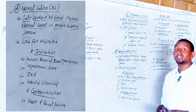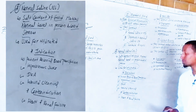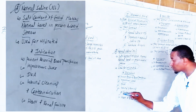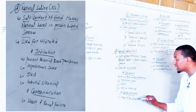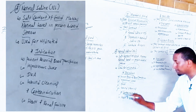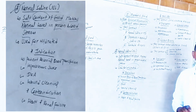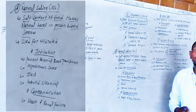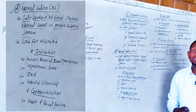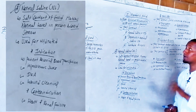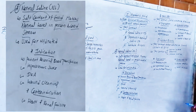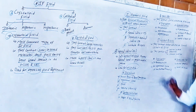What conditions are contraindicated for normal saline? Normal saline is contraindicated when a person has heart failure as well as renal failure.